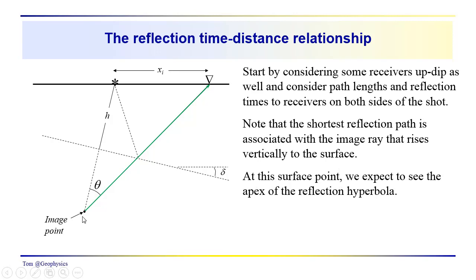Up to this point, we've emphasized the use of the image point in order to define our path lengths. We know that if we were looking at a reflection that went down, hit the layer at normal incidence, and came back up to the source, the length of that path would equal the length of the line drawn from the image point up to the source — that's two times the thickness of the layer, the line drawn from the source down to the reflector at normal incidence.